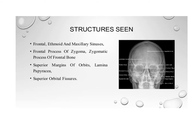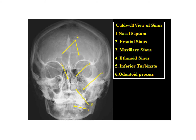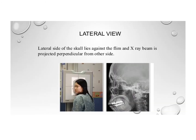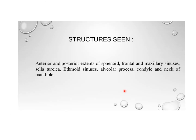The structures seen in Caldwell's view are: frontal, ethmoid, and maxillary sinus; frontal process of zygomatic bone; zygomatic process of frontal bone; superior margin of orbit; lamina papyracea forming the wall of the ethmoid sinus; and the superior orbital fissure. In Caldwell's view of the sinus you can see the nasal septum, frontal air sinus, ethmoidal air sinus, maxillary air sinus, inferior turbinate, and the odontoid process.